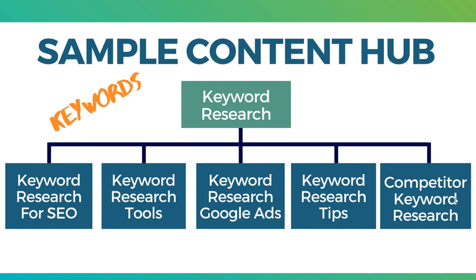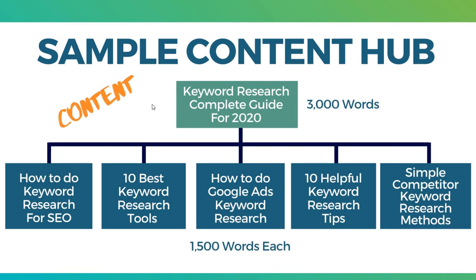What you want to do is start by coming up with keywords, and then start creating content around those keywords. The way my content would probably look is I'd have a 'Keyword Research Complete Guide for 2020' at about 3,000 words or more — really trying to incorporate long form content, especially in competitive spaces where there are great content creators continuously optimizing their blog posts. Then I would create separate articles for all the other keywords: how to do keyword research for SEO, 10 best keyword research tools, how to do Google Ads keyword research, helpful tips, and simple competitor keyword research methods — targeting around 1,500 words each. Ultimately, you want to create better content than your competitors who are currently ranking on the first page of Google.